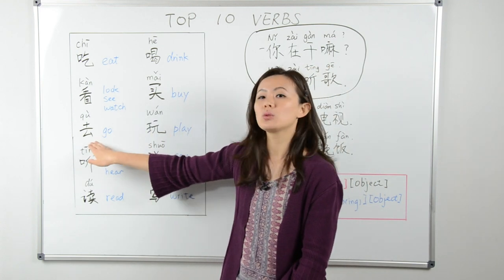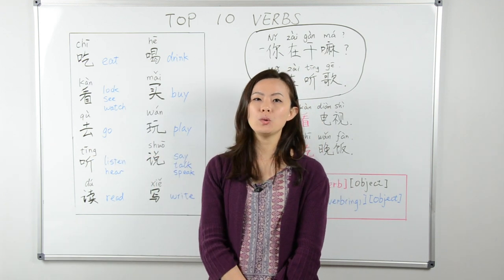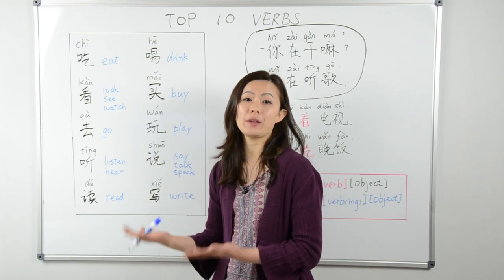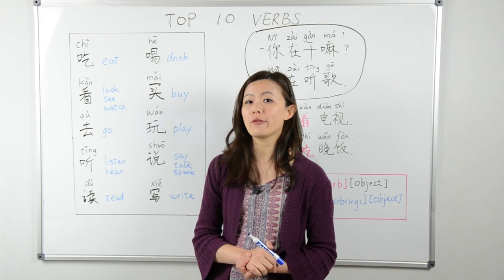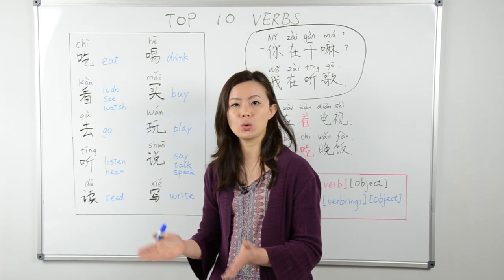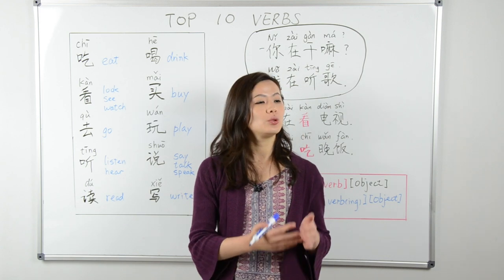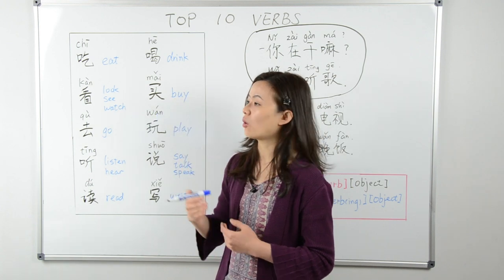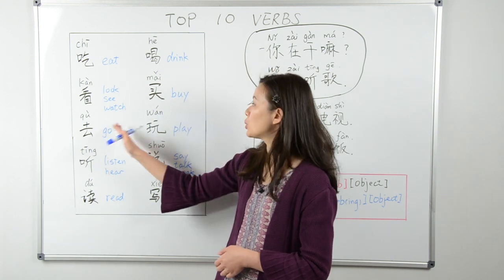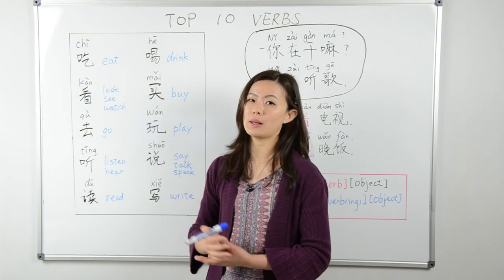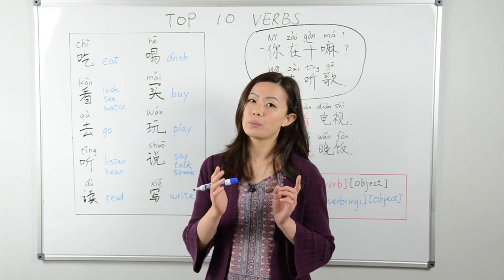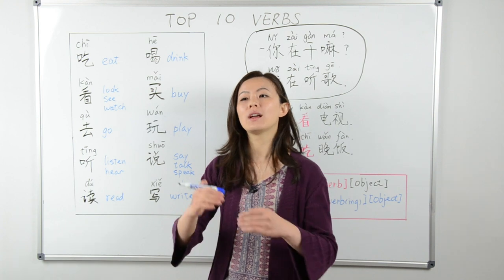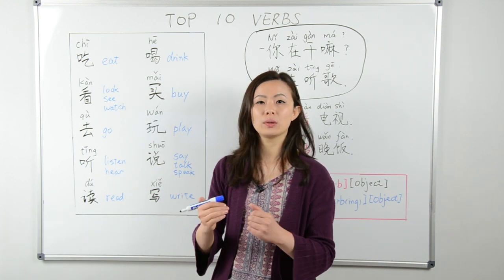Next is 去. 去 means to go — either go someplace or go do something. In Chinese, we often have to put something after 去. For example, 去机场 — go to the airport; 去买东西 — go buy things, go shopping; or 去吃东西 — go eat something. Remember, in a complete sentence you need something after 去: 去 plus a place, or 去 plus an activity.